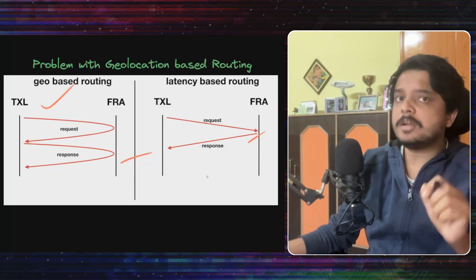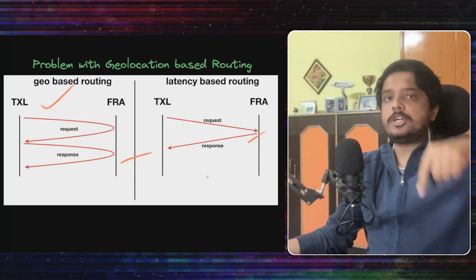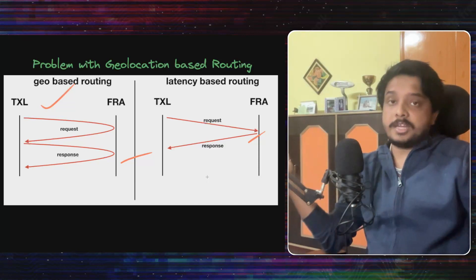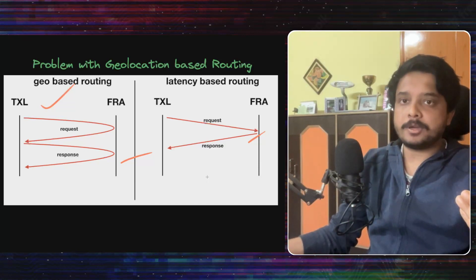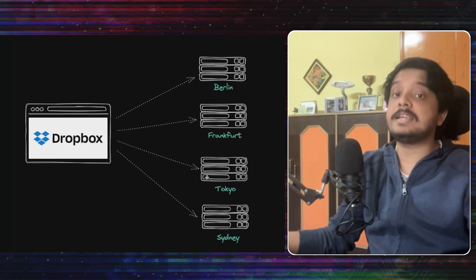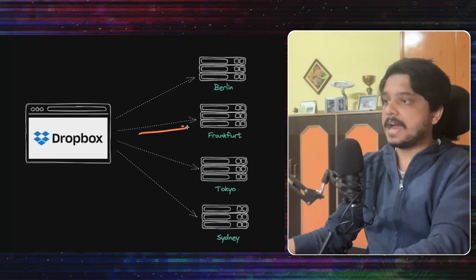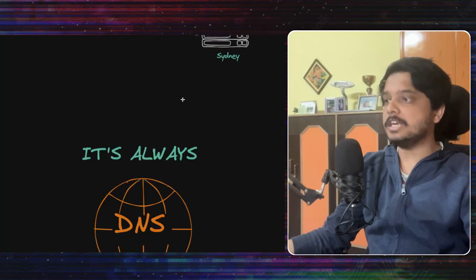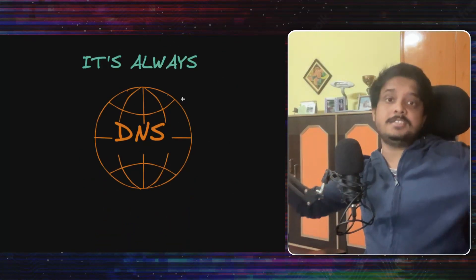Now they know they have to create a map of which user should be routed to which POP based on latency. How will they create this map? First, they made the desktop client intelligent enough to figure out which POP has the least latency. So now the Dropbox client knows that Frankfurt has the least latency. But the challenge is with DNS — like always, it's DNS.